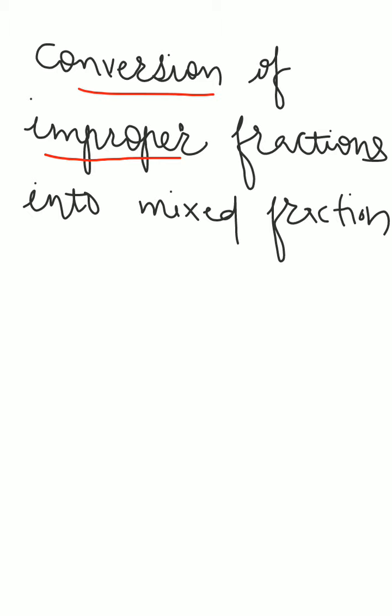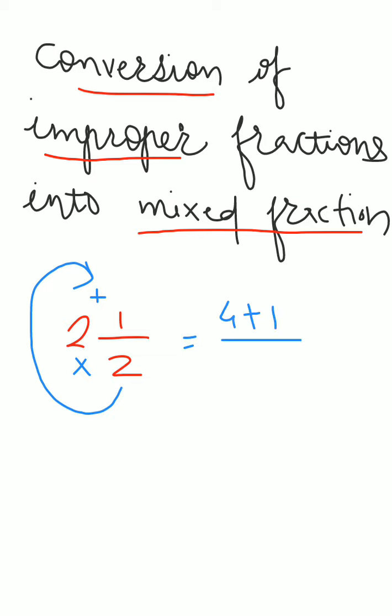In the previous video, we studied mixed fraction ko improper fraction me kaise karna hai. For example, 2 and 1 by 2. Remember I told you here multiplication, here addition. 2 times 2 we will multiply and to the answer of multiplication, we will add the numerator that is 1. So 2 times 4, 4 plus numerator 1 upon denominator as it is. 4 plus 1 is 5, 5 upon 2 is the answer.